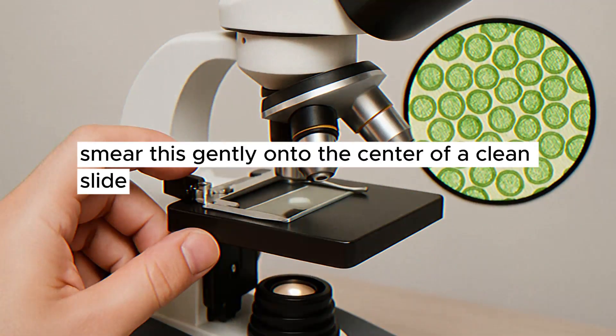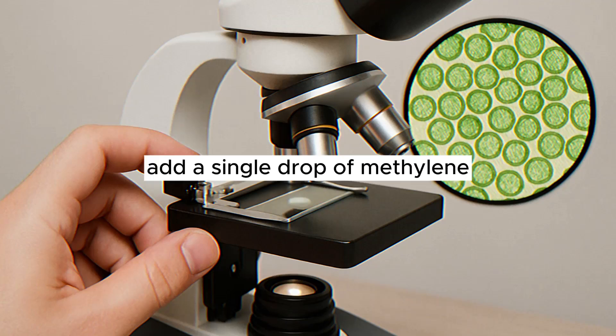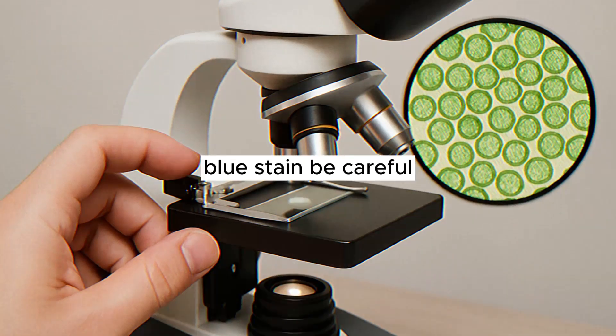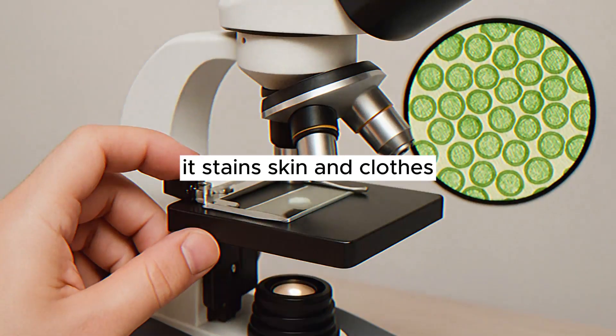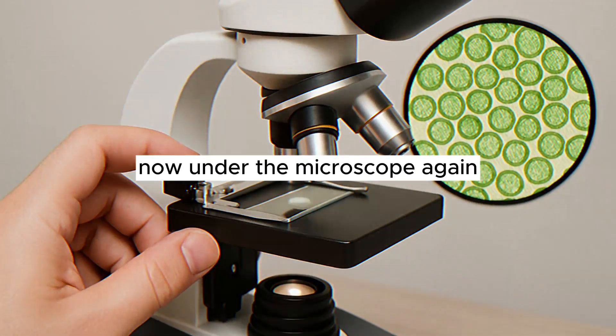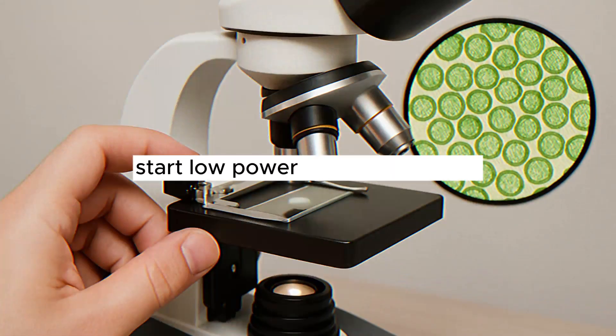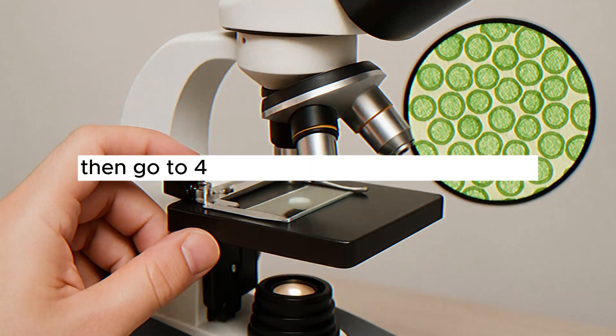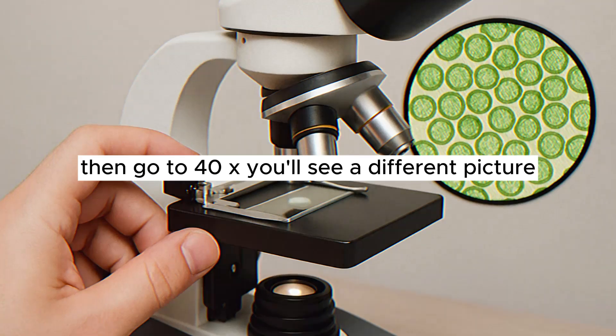You'll get some clear, gooey stuff that's mucus containing your cheek cells. Smear this gently onto the center of a clean slide. Add a single drop of methylene blue stain. Be careful, it stains skin and clothes. Then, carefully lower a cover slip on top. Now, under the microscope, again, start low power to find the smear, then go to 40x, you'll see a different picture.